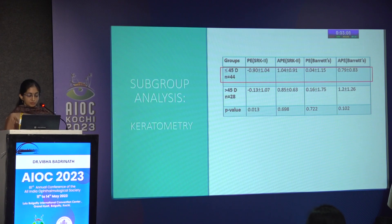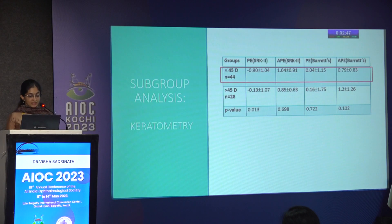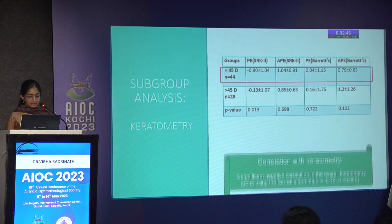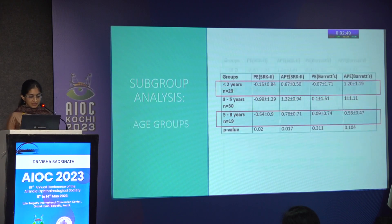In the subgroup analysis according to keratometry, eyes were divided into two groups. In the flatter corneas of less than or equal to 45 diopters, Barrett's performed better than SRK2. But in the higher keratometry group, both formulae were comparable. In the correlation analysis, a significant negative correlation in the overall keratometry group was seen using Barrett's.